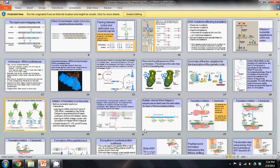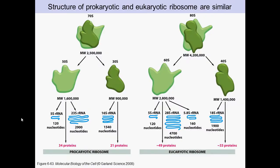In this video we're going to talk about ribosomes and how translation begins. We have the 70S in prokaryotes and 80S in eukaryotes, and they remain as two separate subunits when they're not actively translating.